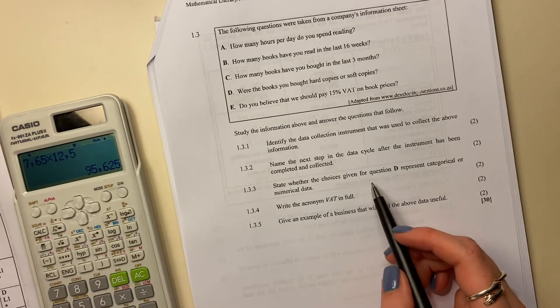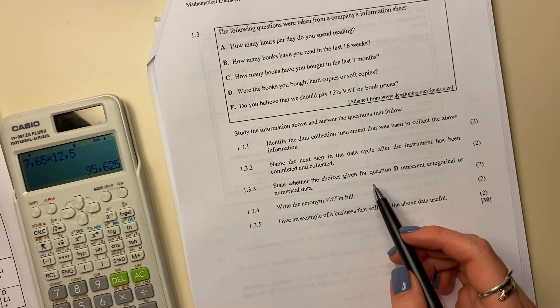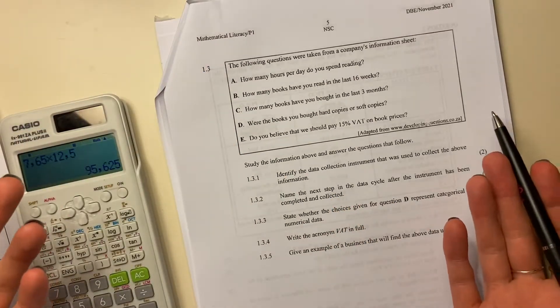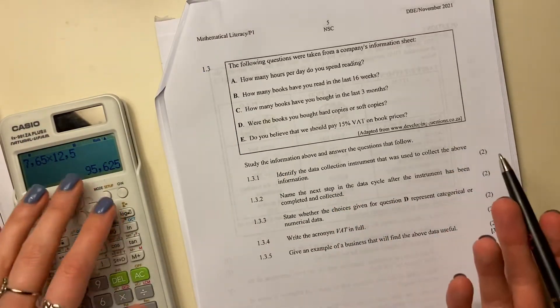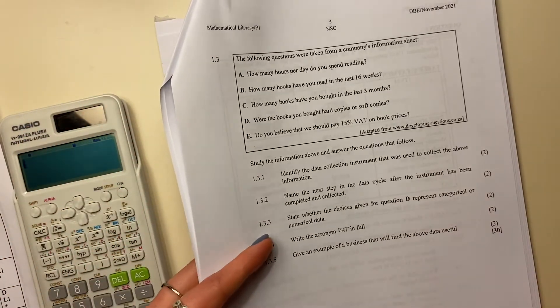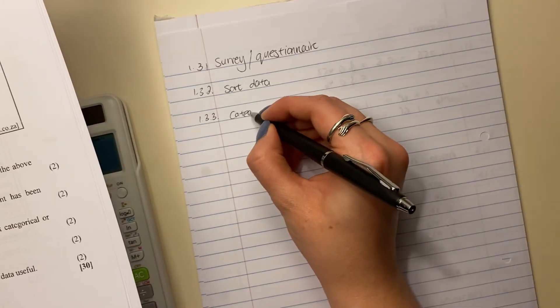Then it says, state whether the choices given for D represent categorical or numerical. So for D, it says, were the books you bought hard copies or soft copies? Now, hard and soft copy, that's not numerical. That's categorical, right? Or what we can call qualitative. So we're just going to write categorical.